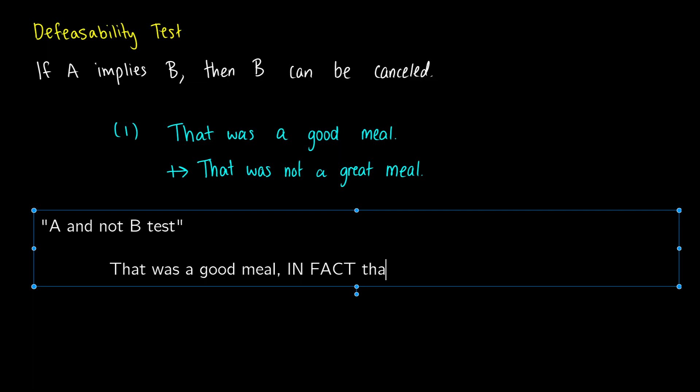So we can say that was a good meal. In fact, that was a great meal. So we're canceling our implicature, essentially, and saying that the opposite of our implicature is true.